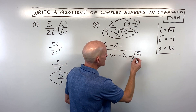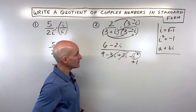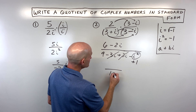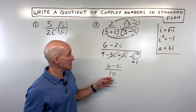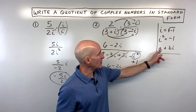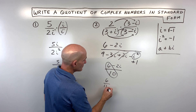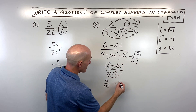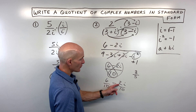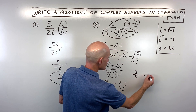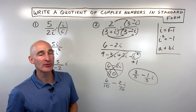Now remember, i squared is negative 1. But there's a negative in front, so we have negative times negative 1, which becomes positive 1. Notice that the negative 3i and the positive 3i cancel. In the denominator we now have 9 plus 1, which is 10. In the numerator we have 6 minus 2i. To put it into standard form, we separate the real and imaginary parts by splitting into two fractions: 6 over 10 minus 2i over 10. Reducing these, 6 over 10 is 3 fifths, and 2i over 10 reduces to 1 fifth i. So the answer is 3 fifths minus 1 fifth i — now you can see it's in standard form, a plus bi.